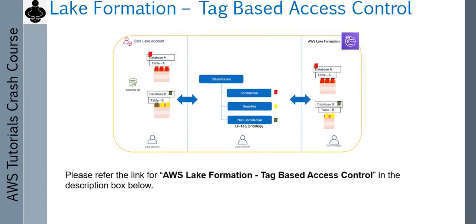Next is tag-based access control. In module 2 you learned how to define access control on your data, and the method discussed at that point was more of a reactive method — meaning a user comes to you and says they want access to a particular data or table on the catalog, and you simply provide that. That is a reactive method. Another approach is a proactive method.